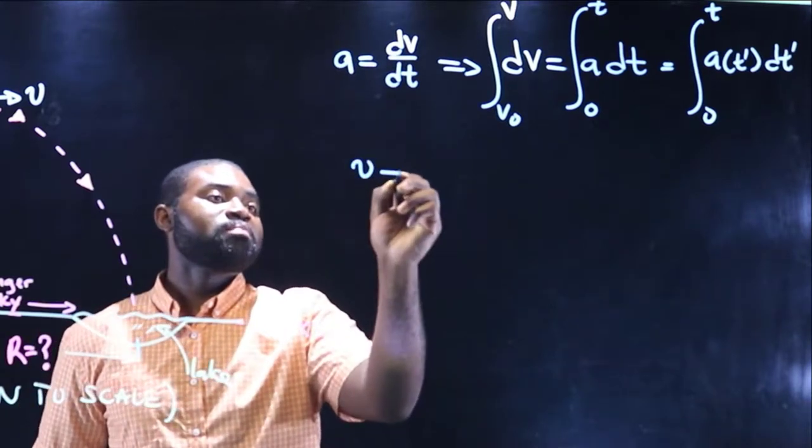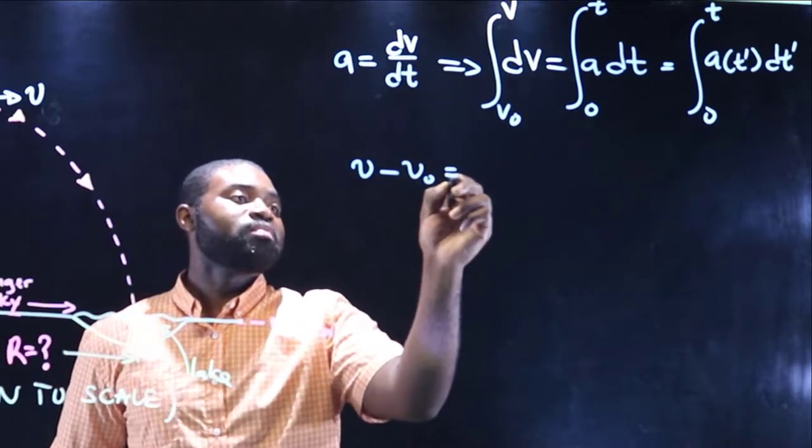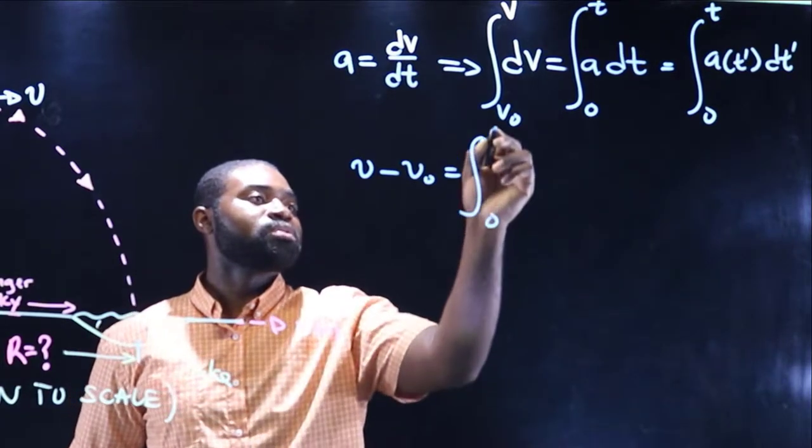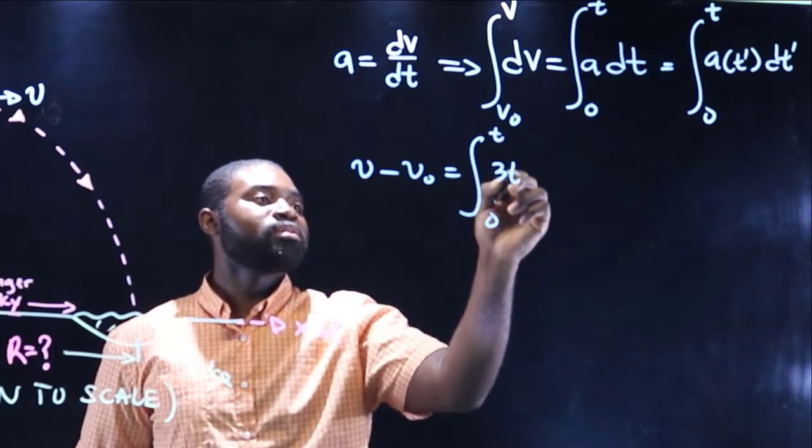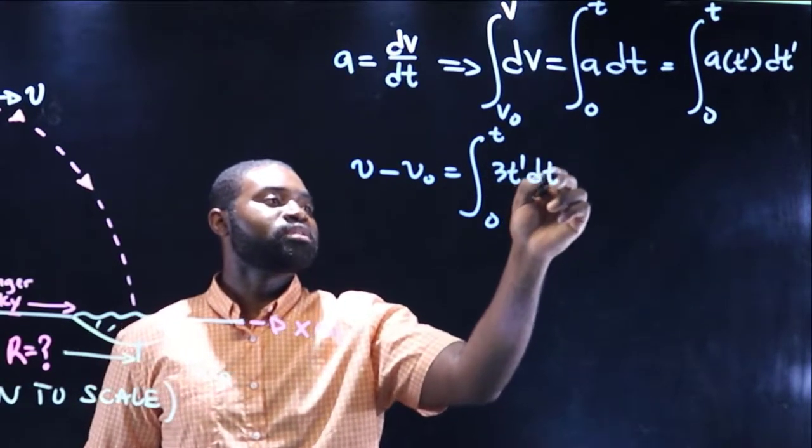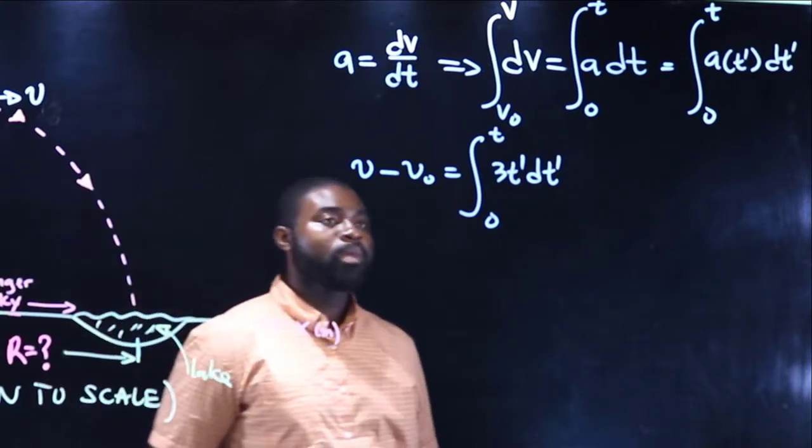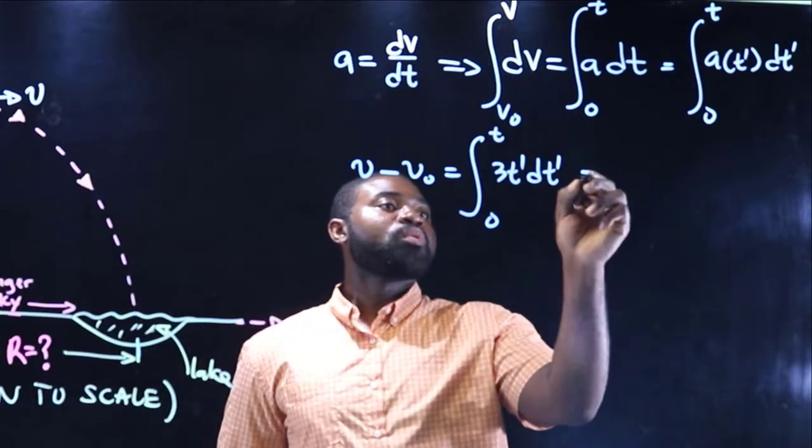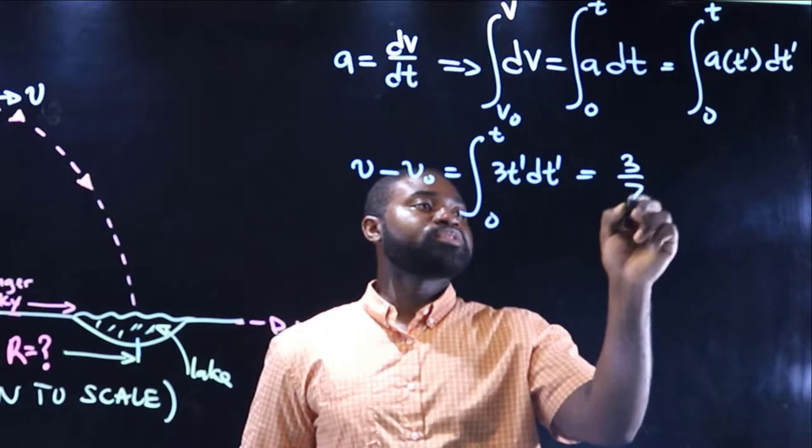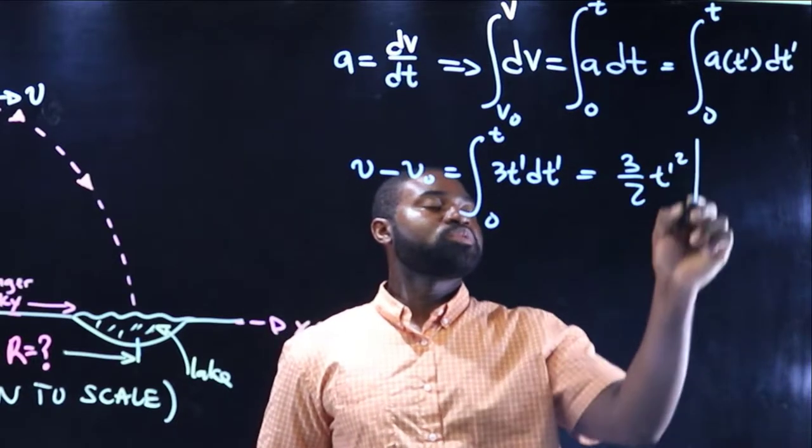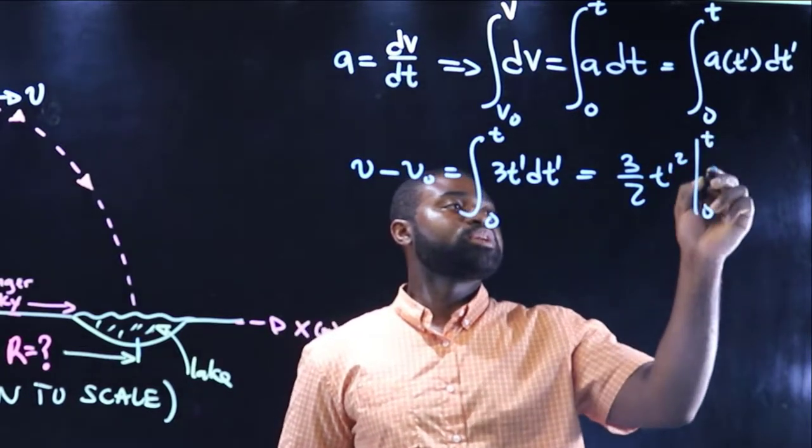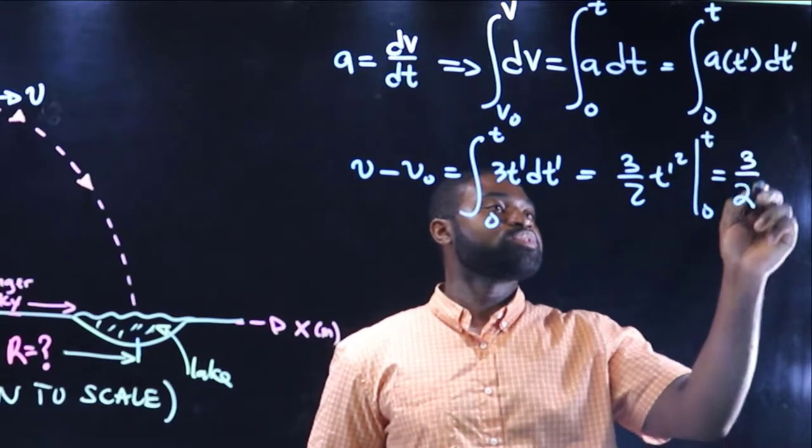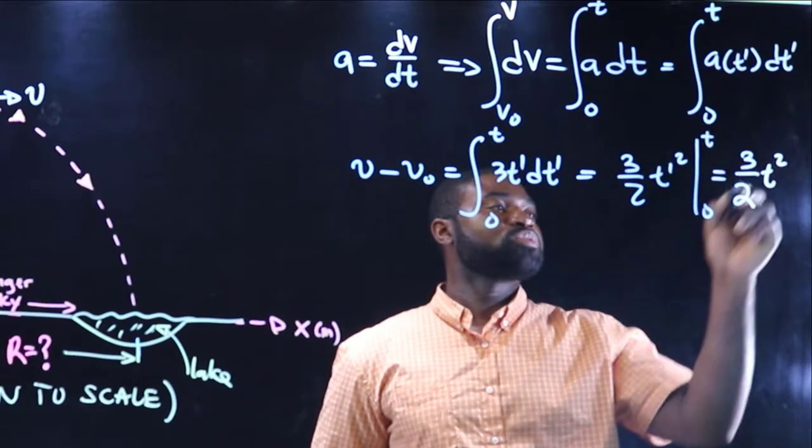And the reason I have used t prime here is simply because we have another t here that represents the particular point in time. This t prime here is just a variable that t is a function of t prime. So this would mean that v(t) minus v-naught will be equal to the integral from 0 to t of 3t prime dt prime, which will be equal to 3 over 2 t prime squared from 0 to t.